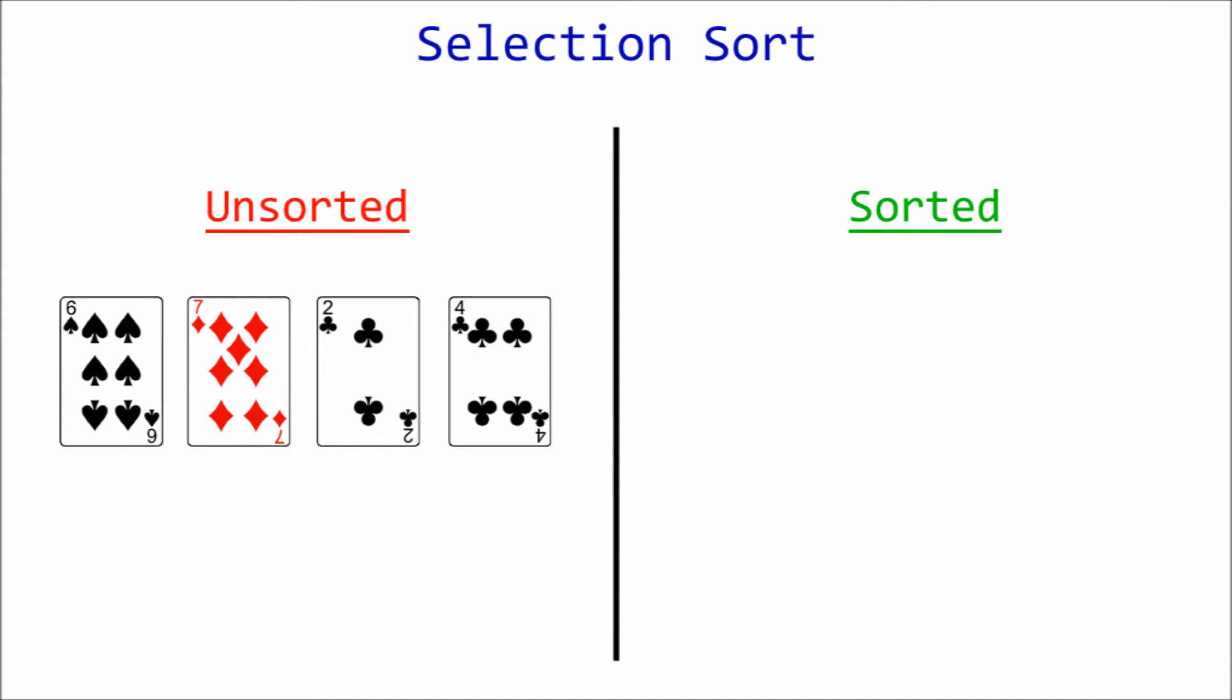For example, say we want to sort these cards in ascending order, from smallest to largest. We have our original list, which we assume is unsorted, and a sorted section that is initially empty.